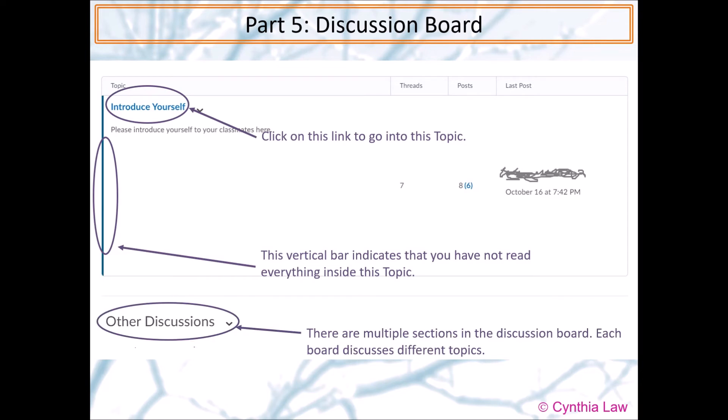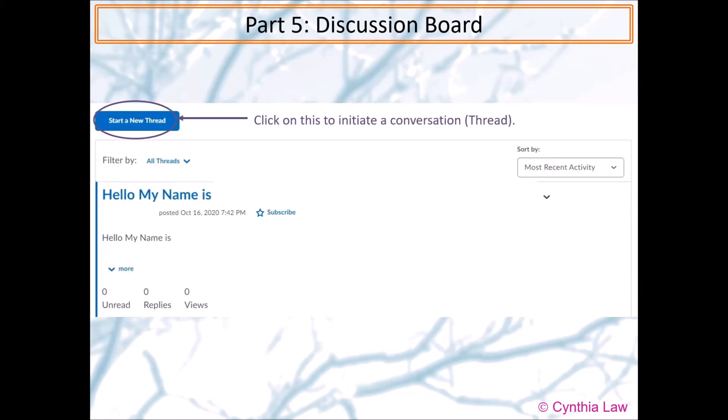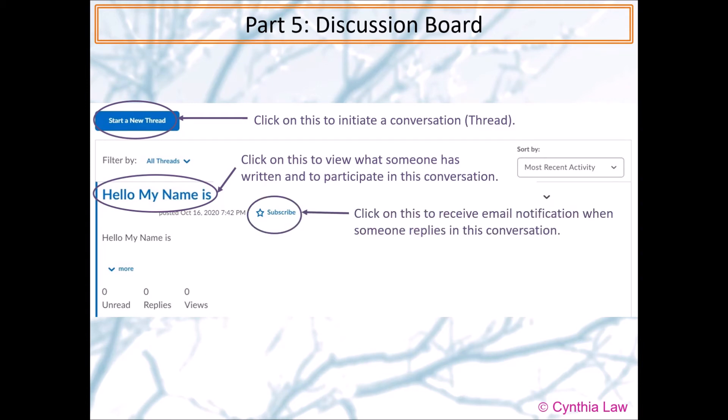There are different sections in the discussion board. Each board talks about a different topic. If you click on the blue button, you can start a new conversation or thread. If you want to read someone else's conversation, you click on the blue title. If you click on subscribe, then you will receive email notifications when someone replies in this conversation.